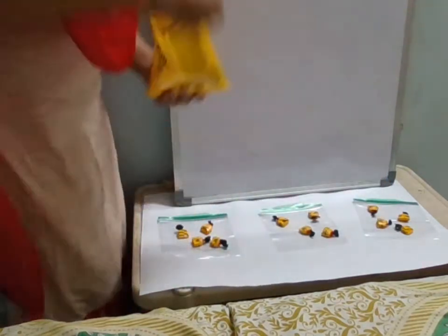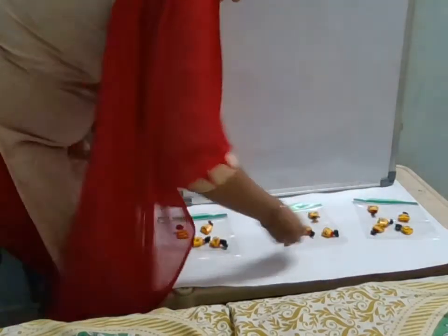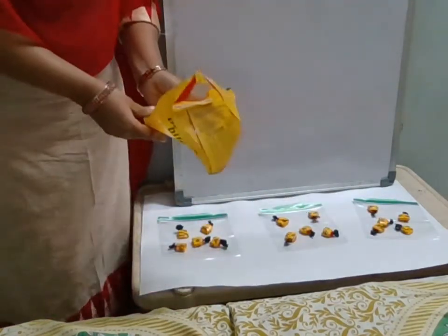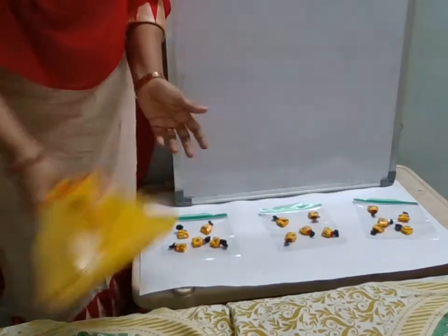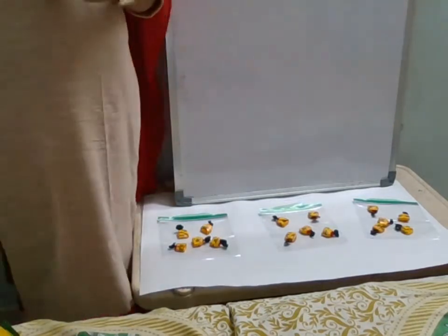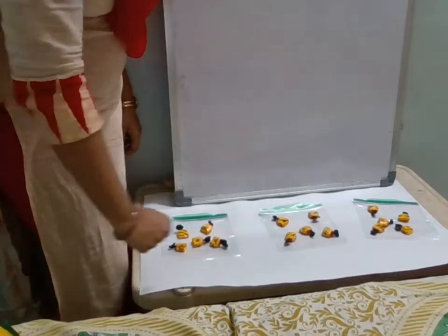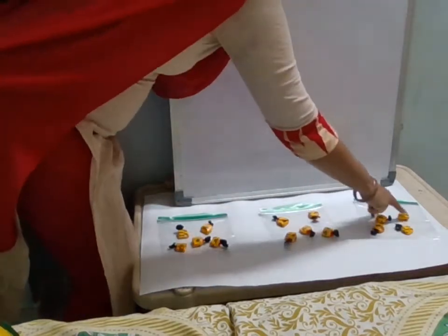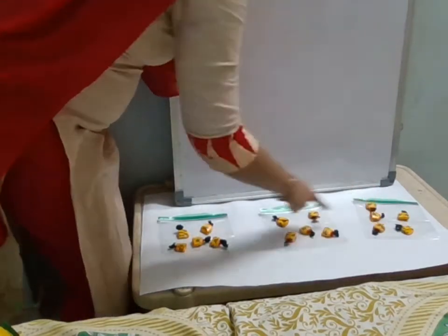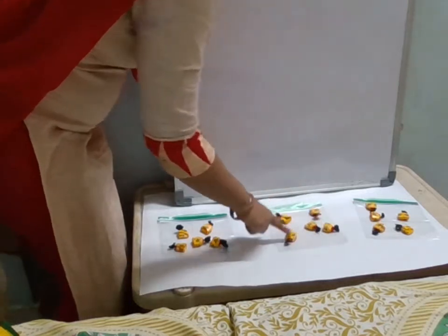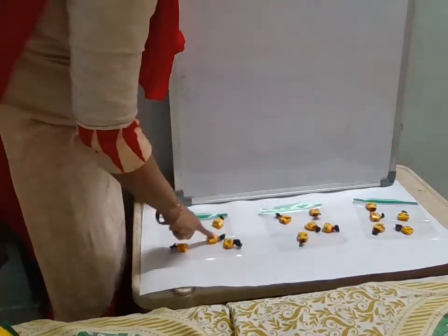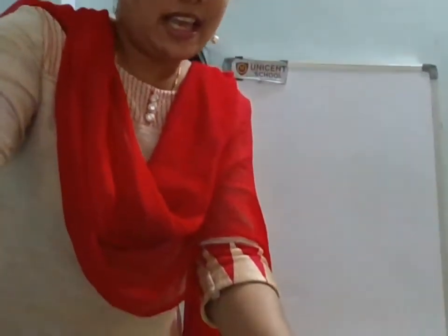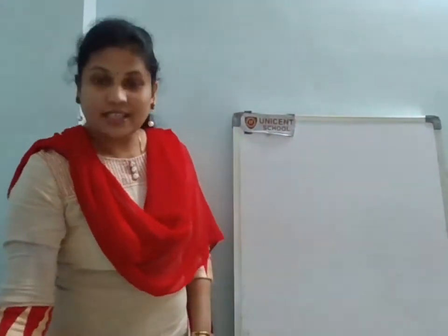Again I will take out three — one here, one here, one here. Again I will take out three — one here, one here, one here. Now I have zero chocolates left. So let's count whether they all got the same number: 1, 2, 3, 4, 5 — 1, 2, 3, 4, 5 — 1, 2, 3, 4, 5. Yes, all of them got the same number of chocolates!